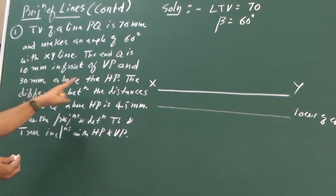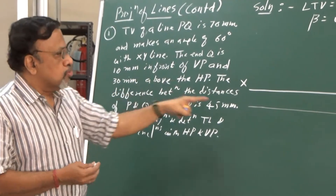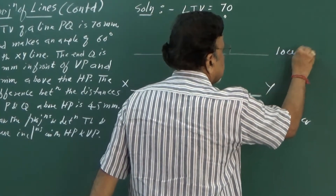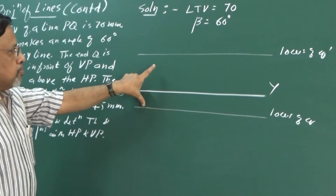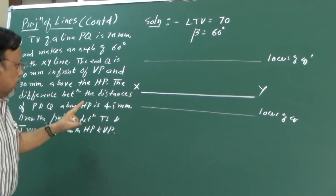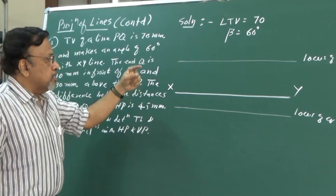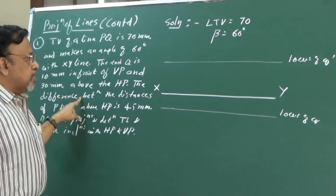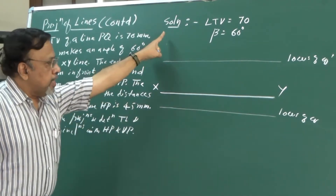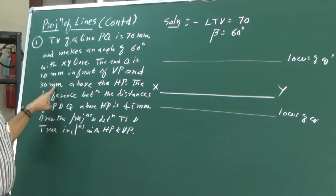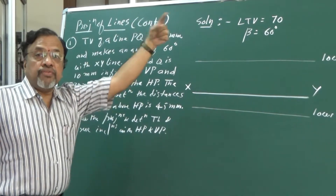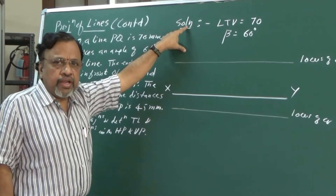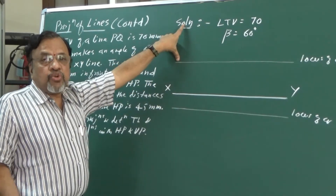I have already given end Q as 30 mm above HP, and I can mark Q-dash in the front view. Now the locus of Q-dash is known both in front view and top view. The difference between the distances of P and Q above HP is 45 mm, meaning the distance between the loci of P-dash and Q-dash in the front view is 45 mm. Instead of directly giving that P is 75 mm above HP, it is given indirectly: 30 plus 45 equals 75.